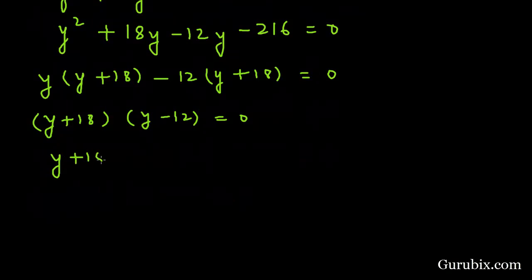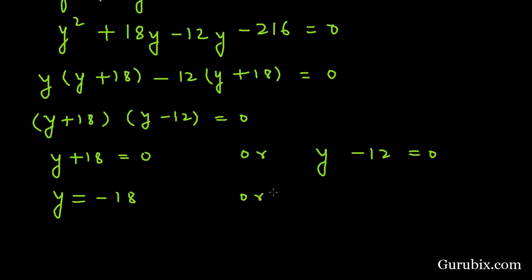Here we have y plus 18 equals 0, or y minus 12 equals 0. This means y is equal to minus 18, or y is equal to 12. But the length cannot be negative, so y is not equal to minus 18. So minus 18 will not be the solution of the question. So y is equal to 12.